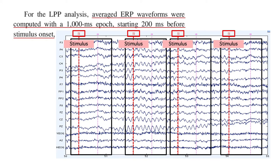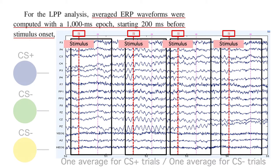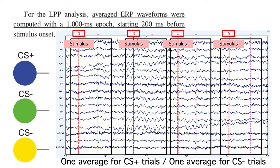The next step was to extract fixed-duration epochs, time-locked to each CS stimulus. Felix used a 1000 ms epoch that included a 200 ms pre-stimulus baseline period. He then combined all the CS plus epochs together into one average, and all the CS minus epochs into another average. The two different CS minus stimuli were just averaged together.